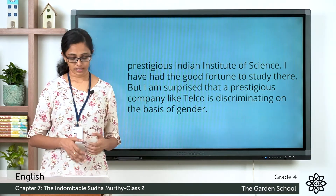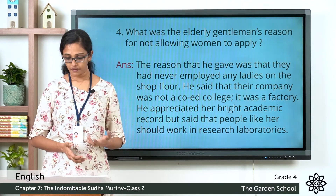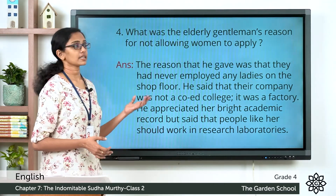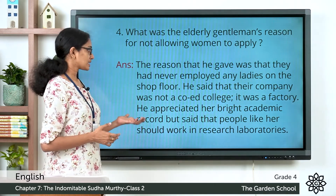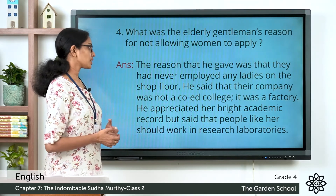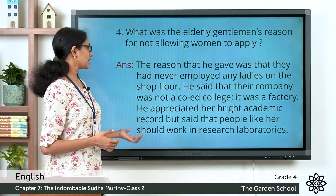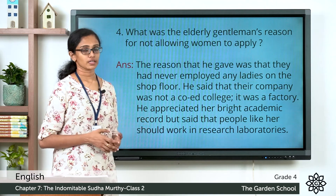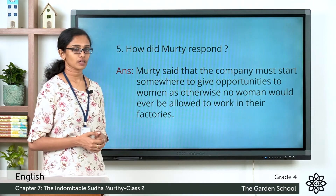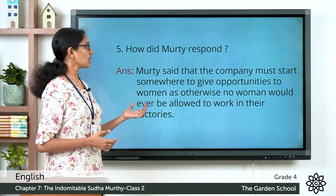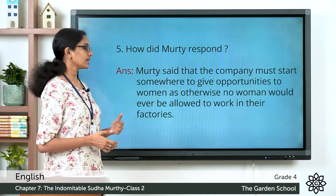Now the fourth question: What was the elderly gentleman's reason for not allowing women to apply? The reason he gave was that they had never employed any ladies on the shop floor. He said their company was not a quiet college — it was a factory. He appreciated her bright academic record but said that people like her should work in research laboratories. Question number five: How did Murthy respond? Murthy said that the company must start somewhere to give opportunities to women, as otherwise no woman would ever be allowed to work in their factories.